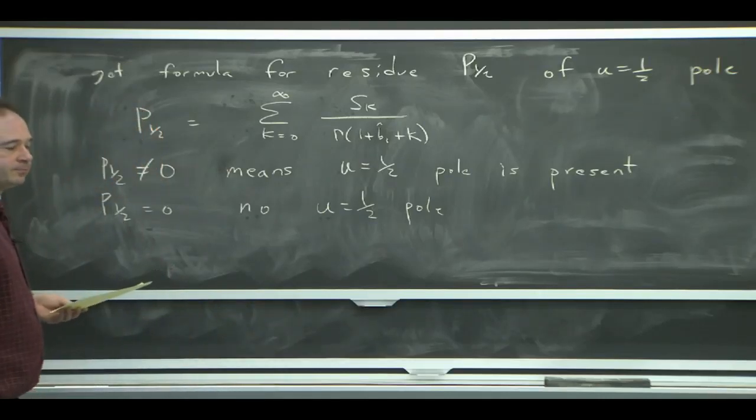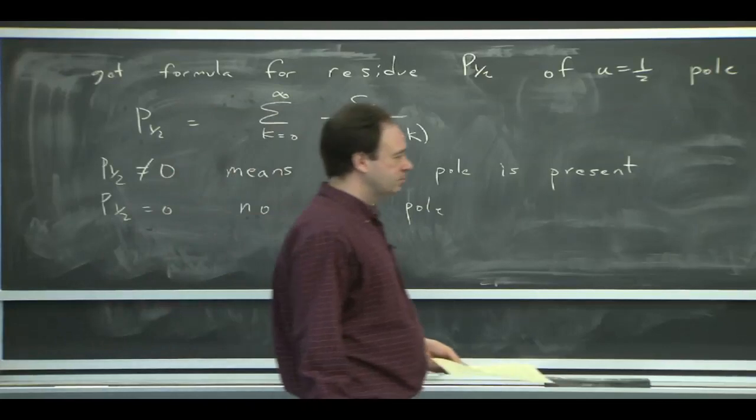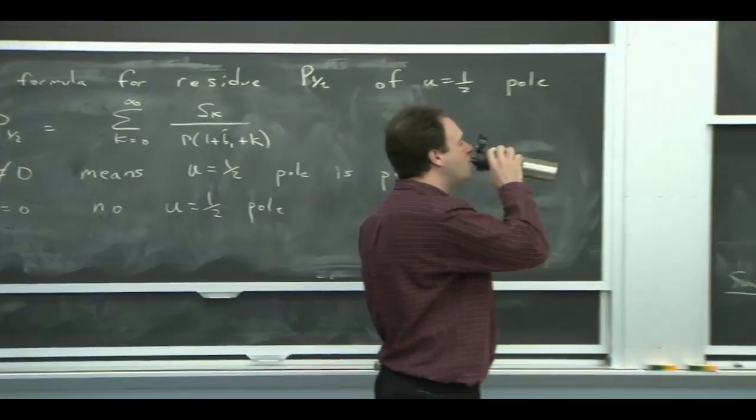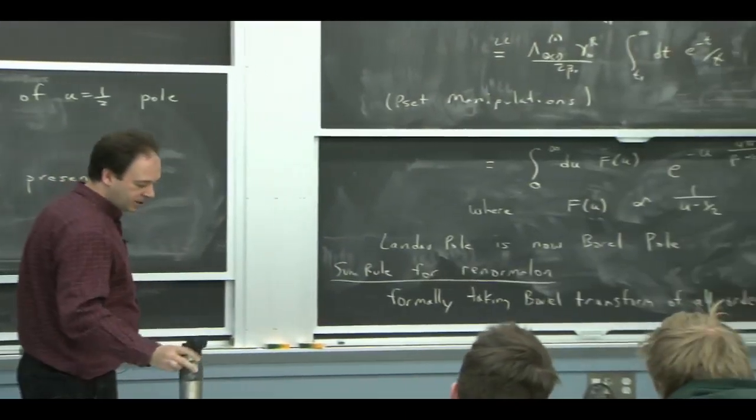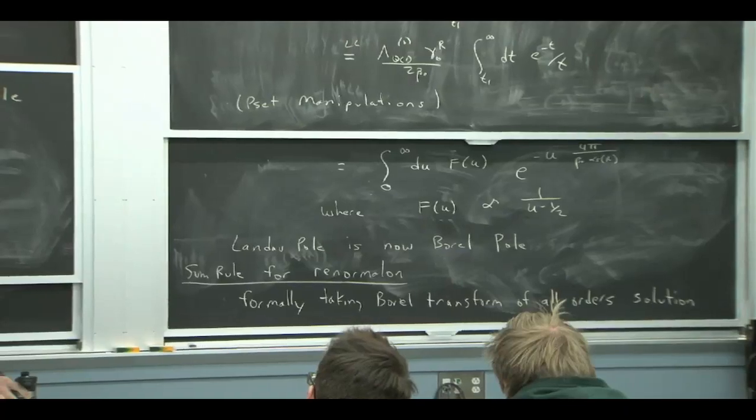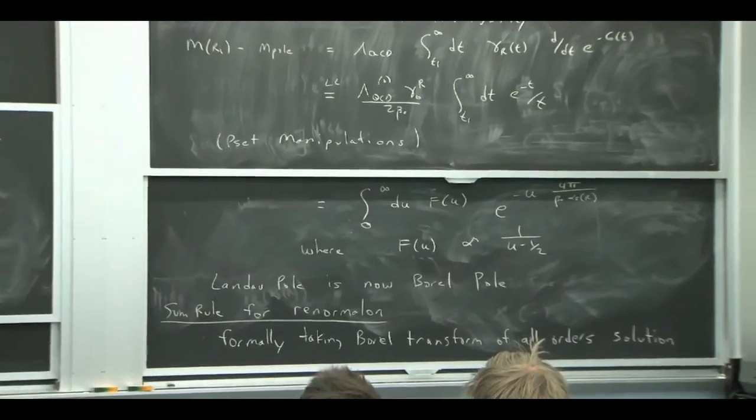Yeah? Yeah. So when you did the, well, this guy calculation here, that capital F, is it the same result as we found, like, or something that has, like, the renormalon of U for one and all that stuff as well? No. It's just the U equals a half pole. Only as U. Yeah.